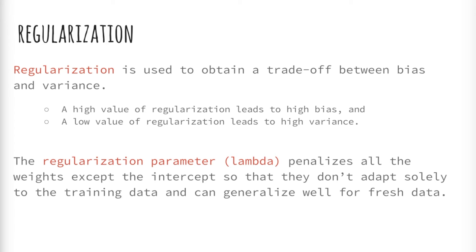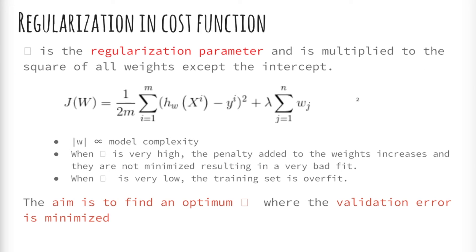The regularization hyperparameter we use is called lambda, and it penalizes all weights except the intercept. The intercept has no issues with overfitting. It always generalizes fine, which should be intuitive. As you can see, we have added a new term to the cost function: lambda times the sum of each weight squared, starting from the weight for feature x1, ignoring the bias term.